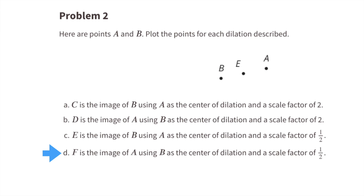Part d: F is the image of A using B as the center of dilation and a scale factor of 1 half. Start at B, head towards A, and stop halfway. F would be at the same location as E.